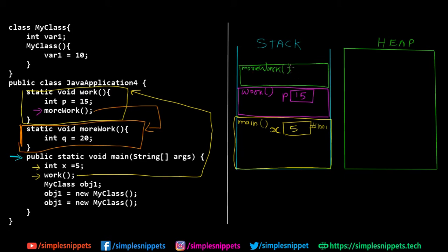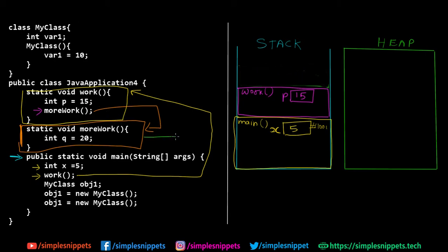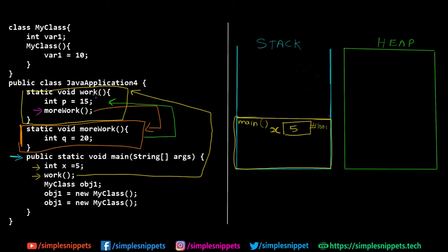Inside more work we have one variable q storing a value of 20 — again a local variable which exists only inside more work. Once the execution of more work is done, this memory is erased from the stack along with local variable q, and control is transferred back to the calling method, work. Since more work was the last statement inside work, even the work method completes and is cleared from the stack. Control is then given back to main.